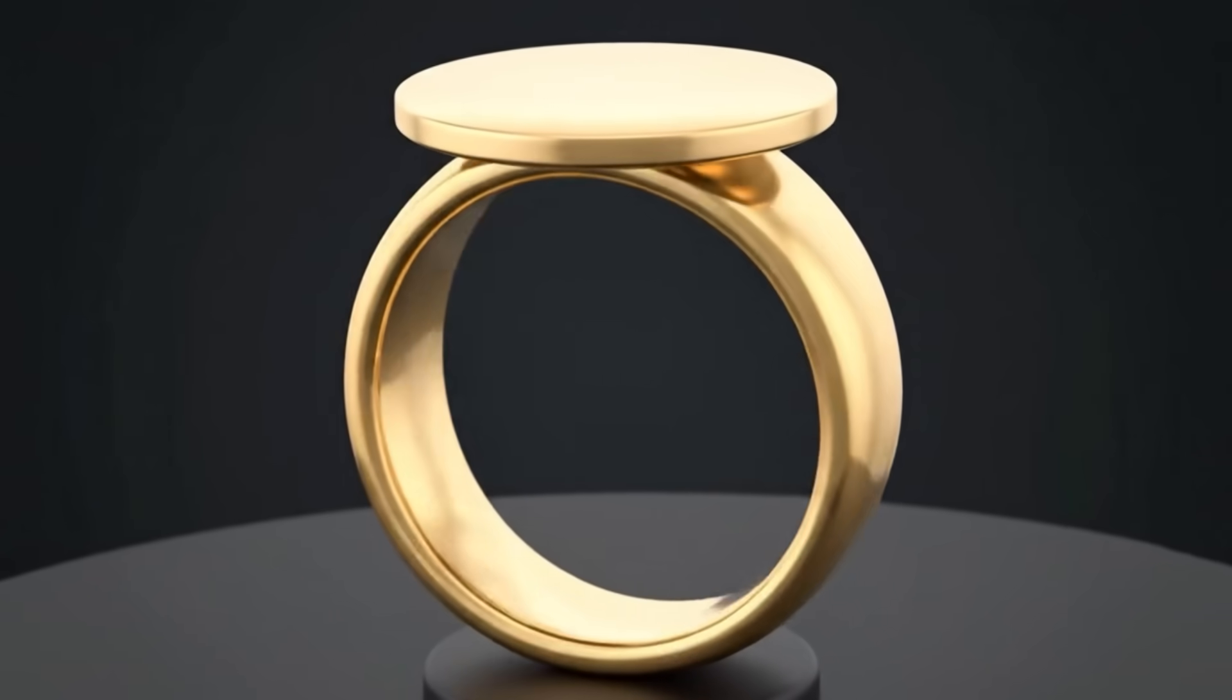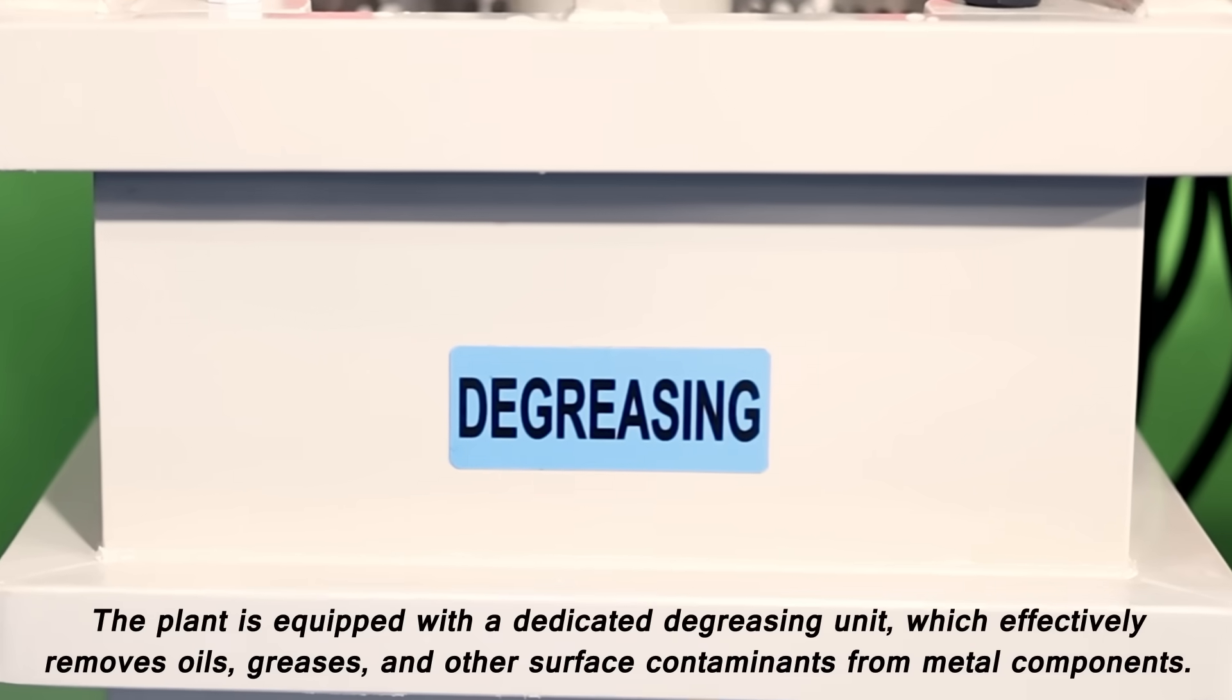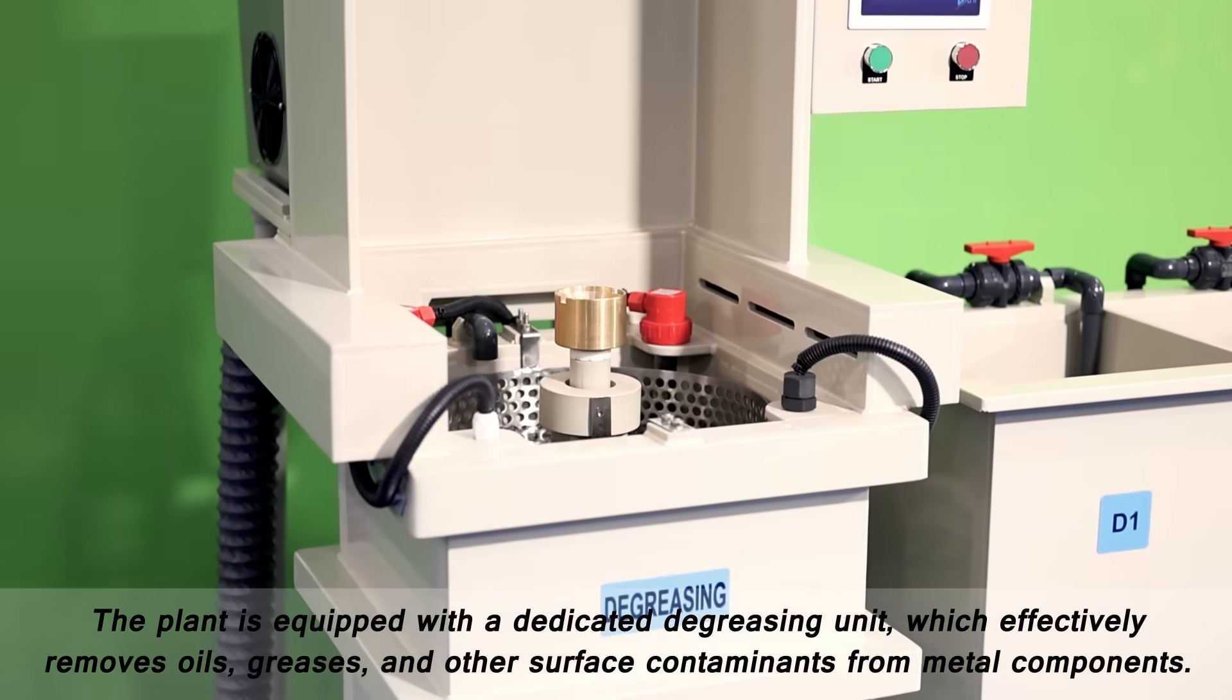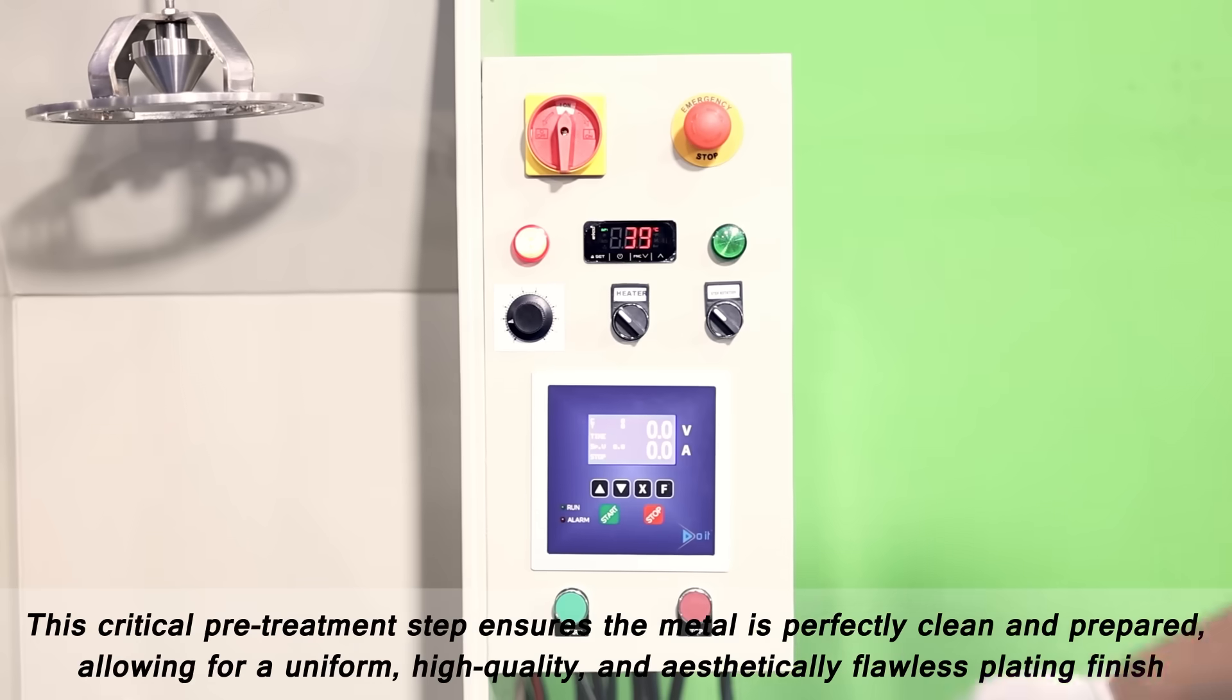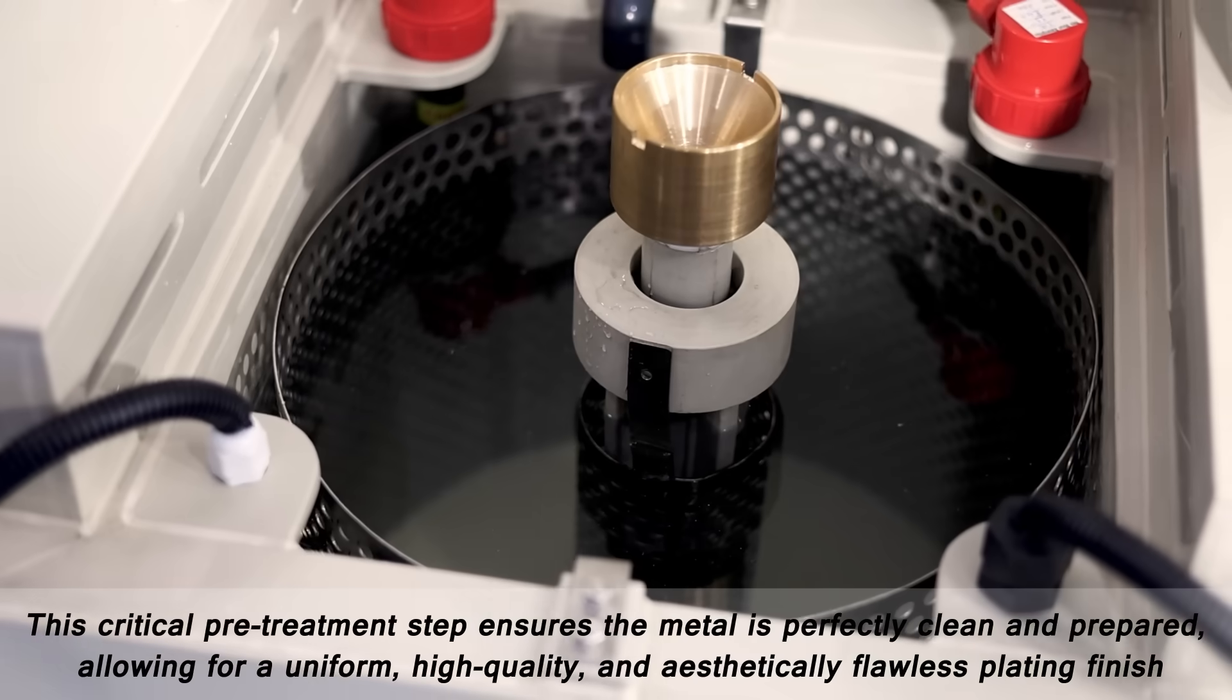The plant is equipped with a dedicated degreasing unit which effectively removes oils, greases, and other surface contaminants from metal components. This critical pre-treatment step ensures the metal is perfectly clean and prepared, allowing for a uniform, high-quality, and aesthetically flawless plating finish.